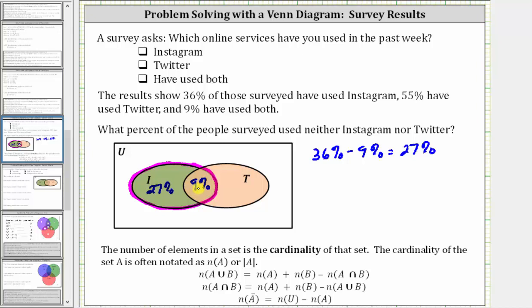Again, notice how we have 36% who use Instagram: 27% only use Instagram and 9% also use Twitter. We're also told 55% use Twitter, which means set T must contain 55%, and notice how the 9% here is also in set T.